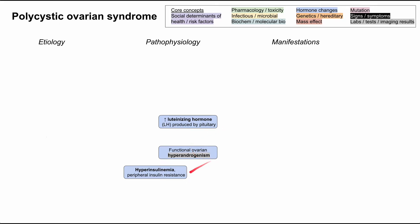These three findings are all interrelated with each other. For instance, hyperinsulinemia can lead to hyperandrogenism, and both of them can cause the premature luteinization of the granulosa cells in the ovary, which in turn increases the LH hormone produced by the pituitary. Luteinizing hormone in return stimulates theca cells, which can produce testosterone and other androgens, kind of leading back to that hyperandrogenism.